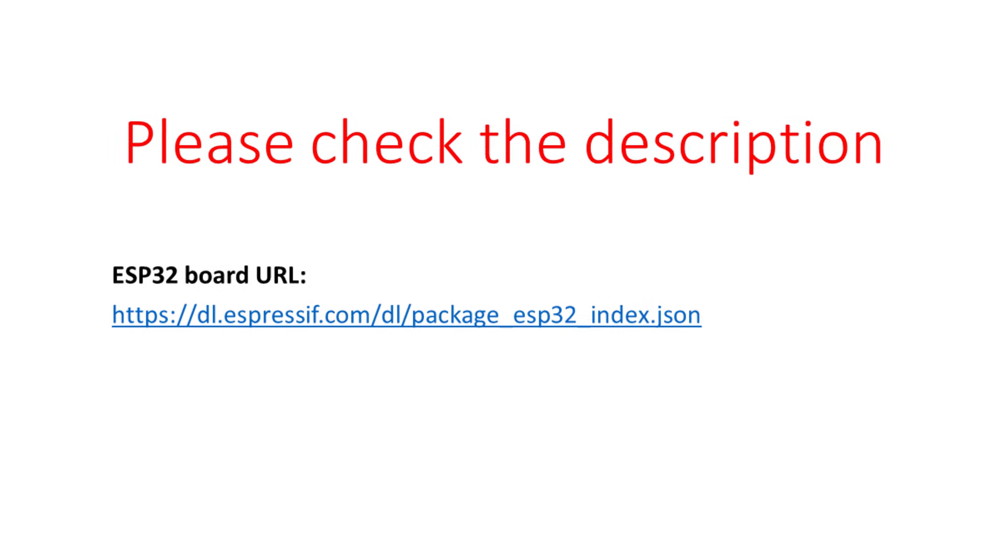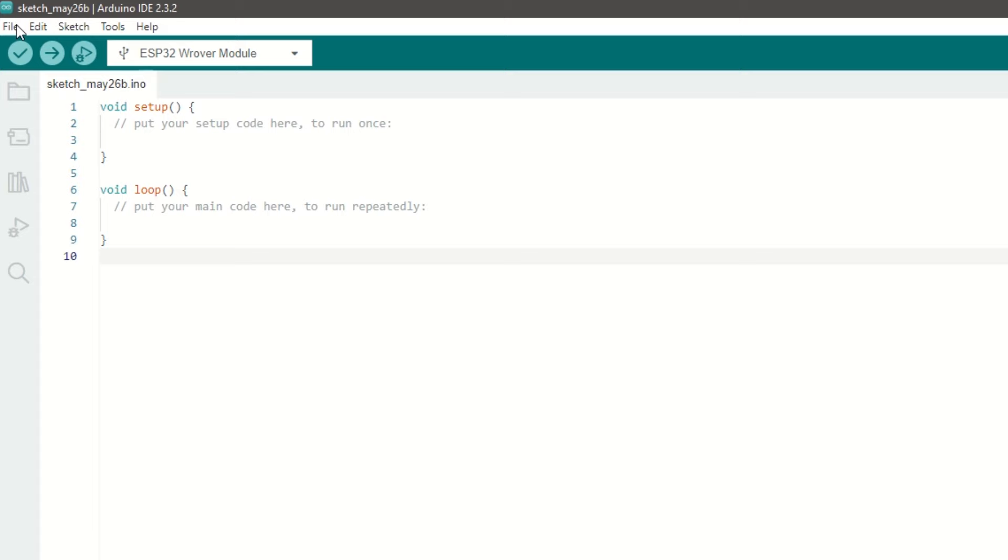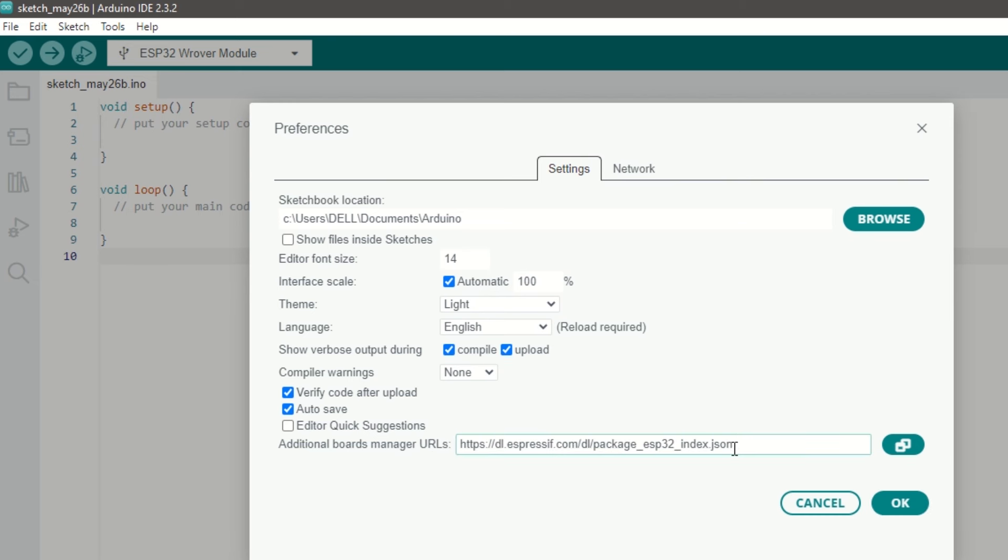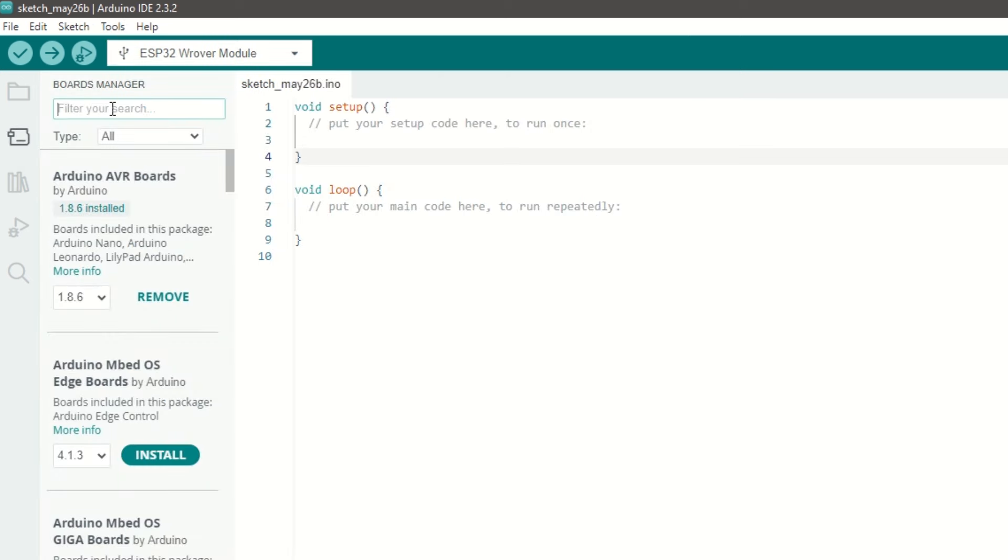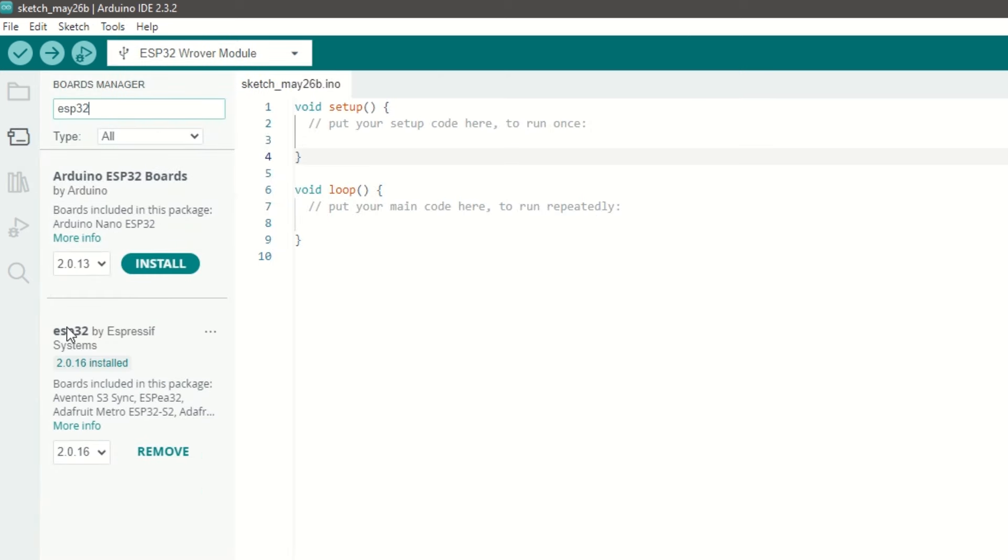Let's take a quick look at the tractor code now. First we need to install ESP32 board using Arduino board manager. I have provided the ESP32 board link in the description below. Go to File, Preferences and add the ESP32 board link. Then go to Tools, then Boards Manager and search for ESP32 and install it.